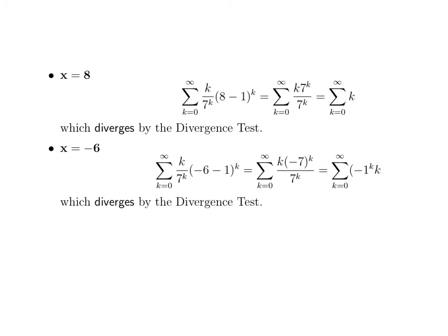Here's the original series: k over 7 to the k times x minus 1 to the k. Plug in 8 for x, and you've got 8 minus 1 equals 7 to the k, which magically cancels with the 7 to the k on the bottom, leaving the series sum from k equals 0 to infinity of k. The divergence test: as k goes to infinity, k goes to infinity — so this series diverges. So we are missing that endpoint.